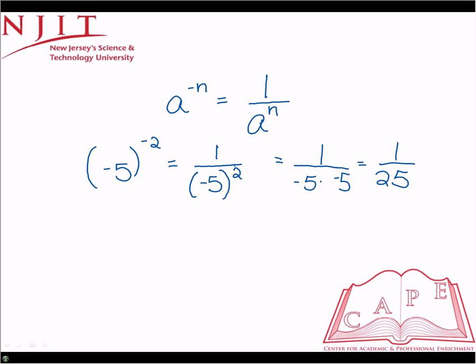So if we do the same thing, except that now we have negative 5 raised to the negative 2, same idea. First, address the negative exponent first. So it's going to be 1 over negative 5, now raised to the 2 because we've turned it into a fraction.